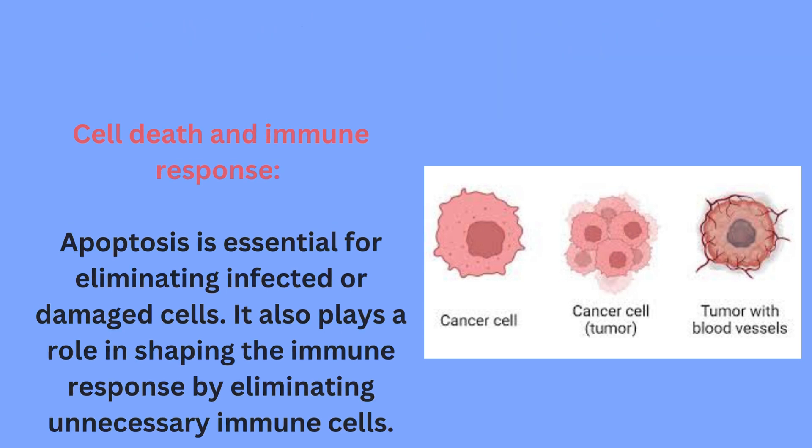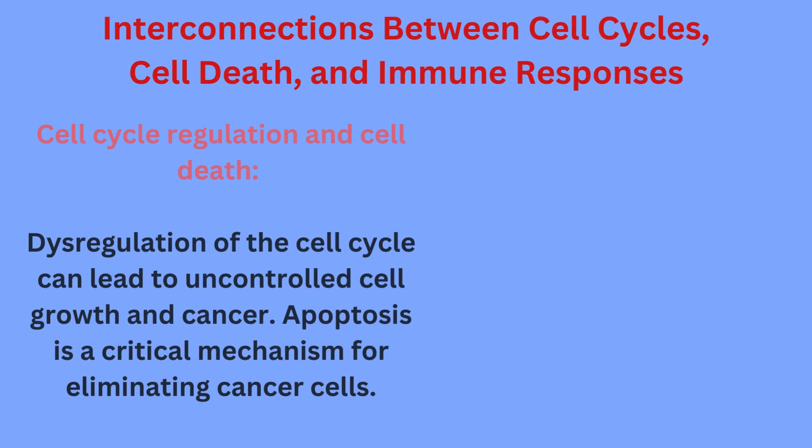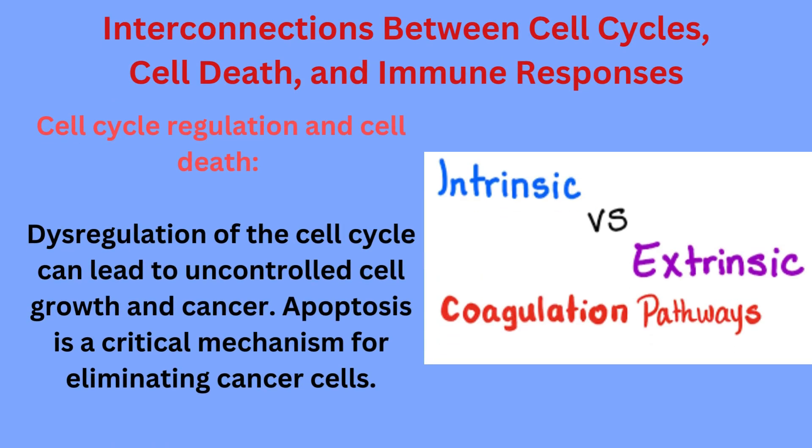Cell cycle regulation and cell death are also closely connected. Dysregulation of the cell cycle can lead to uncontrolled cell growth and cancer, and apoptosis is a critical mechanism for eliminating cancer cells.